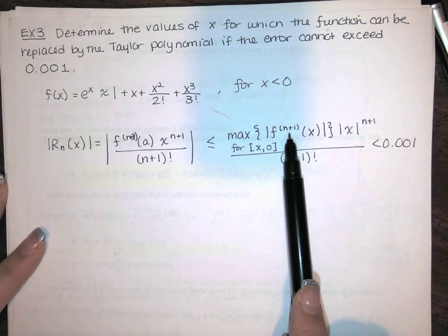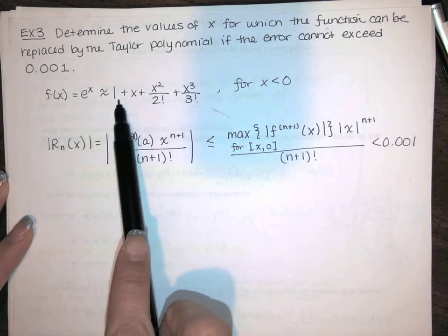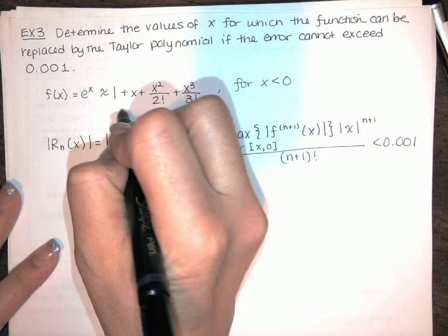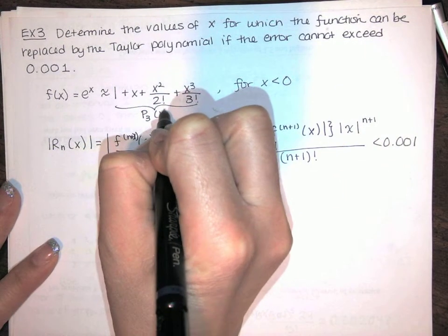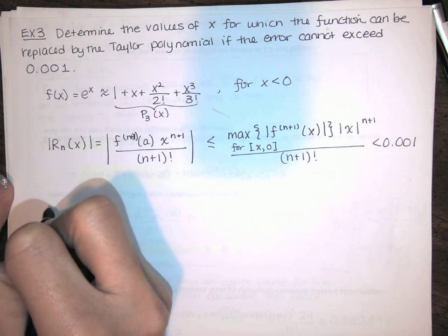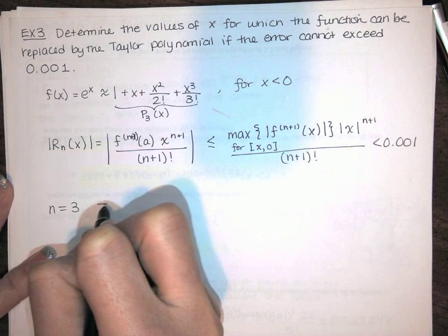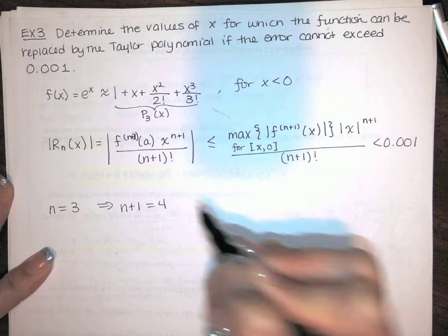So first I need to identify n. We're using a Taylor or a Maclaurin polynomial of degree 3. So n equals 3. So if n equals 3, that means n plus 1 is equal to 4.